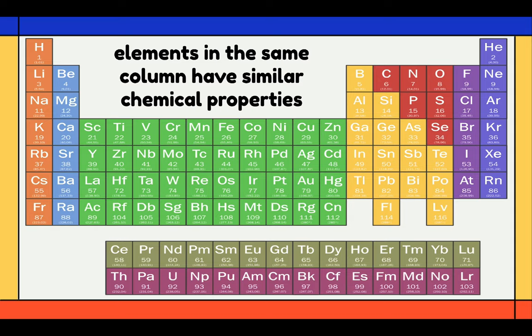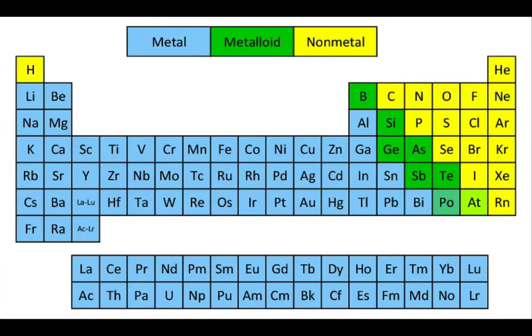The elements in the periodic table are split up into three categories: we have the metal, metalloid, and the non-metal.